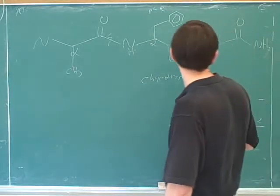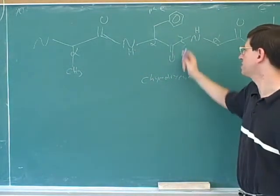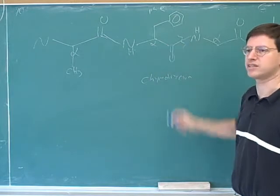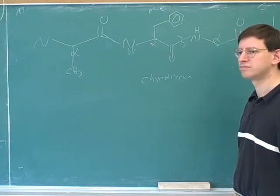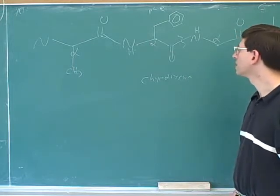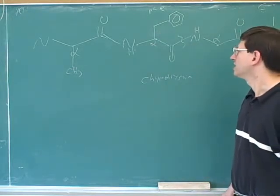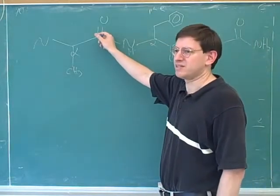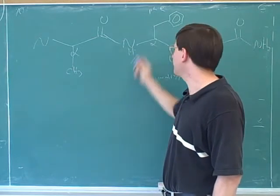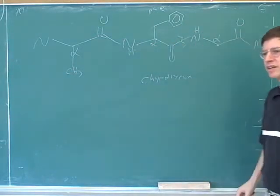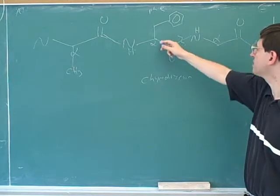So chymotrypsin would cleave on the carboxy side, which is this bond here, because this is the carboxy side. It makes sense because we're looking in relation to the R group — that phenyl R group. We want the carboxy side of this amino acid. Clearly the other carbon is not the carboxy carbon for this amino acid, because it's not attached to this alpha carbon. Labeling the alpha carbon makes it much easier to identify the correct carboxy carbon. I hope you've been labeling the alpha carbons on every problem.